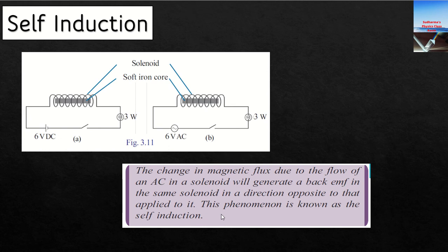That phenomenon is known as self-induction. In the case of transformers, we discussed mutual induction, where we had two coils and the change in magnetic flux in one coil induces a current in the next coil. Here, self-induction is within the same coil — an EMF is generated which opposes the power supply applied to it.